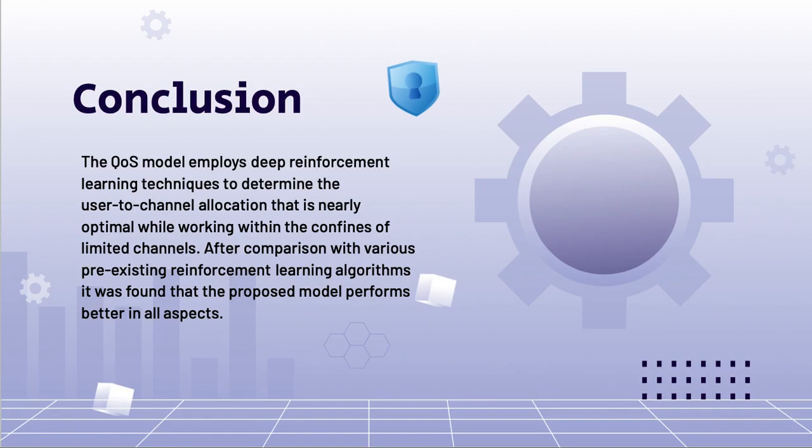AR socialization experience. The QOS model employs deep reinforcement learning techniques to determine the user to channel allocation that is nearly optimal while working within the confines of limited channels. The conventional methods of optimizations are inadequate for addressing the suggested sequential problem.